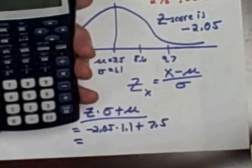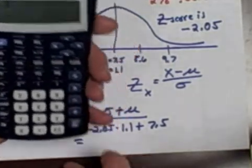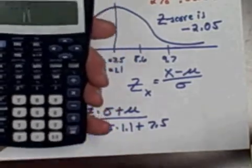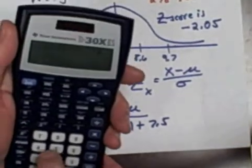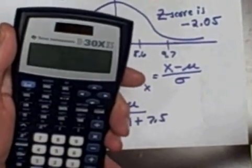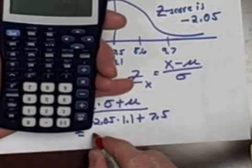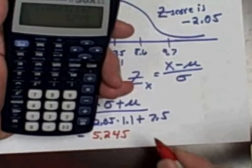Let me, instead of putting in 1.1, I put in 0.1 point. Oh, let me try it again. You probably already got the answer. Negative 2.05 times 1.1. Yeah, I did it right. Plus 7.5 equals, see, I make stupid mistakes too, equals 5.245.